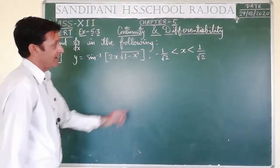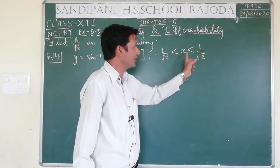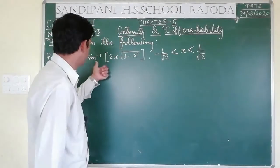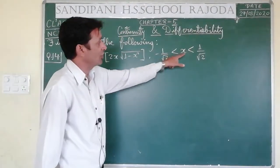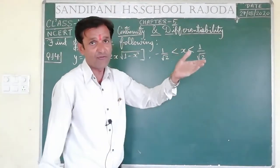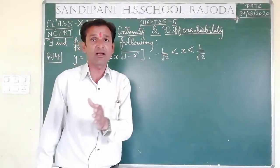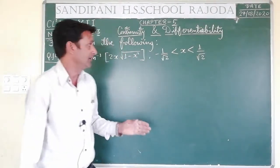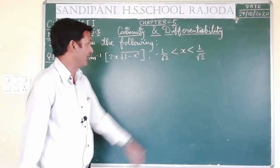Here -1/√2 and 1/√2 are both not included in the interval, because in case of inverse trigonometry they are not included. In case of trigonometry we may write it in the closed interval manner, but here it is in the form of open interval.